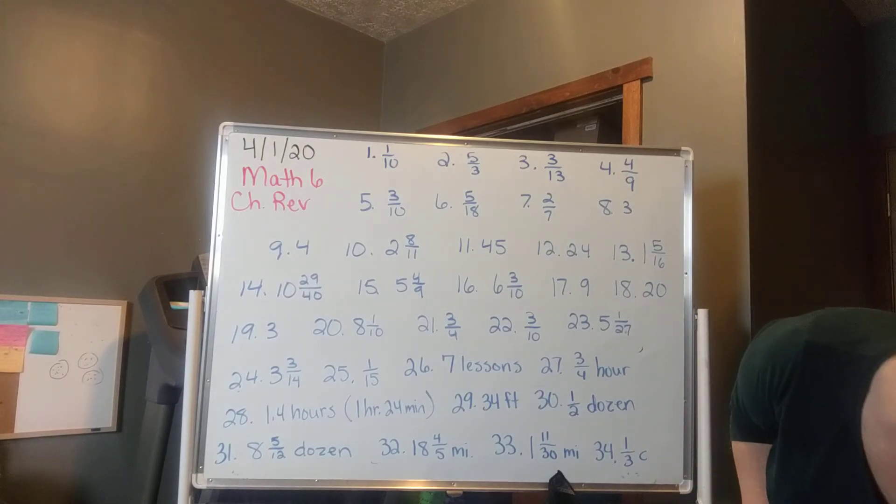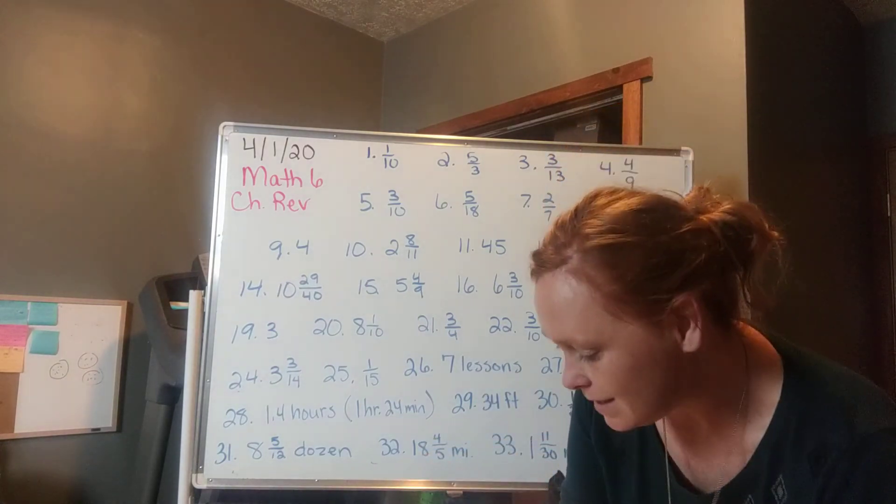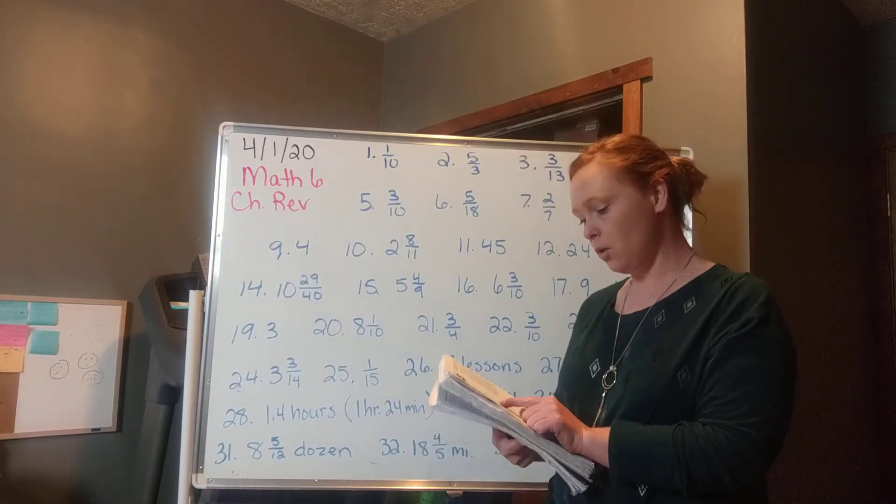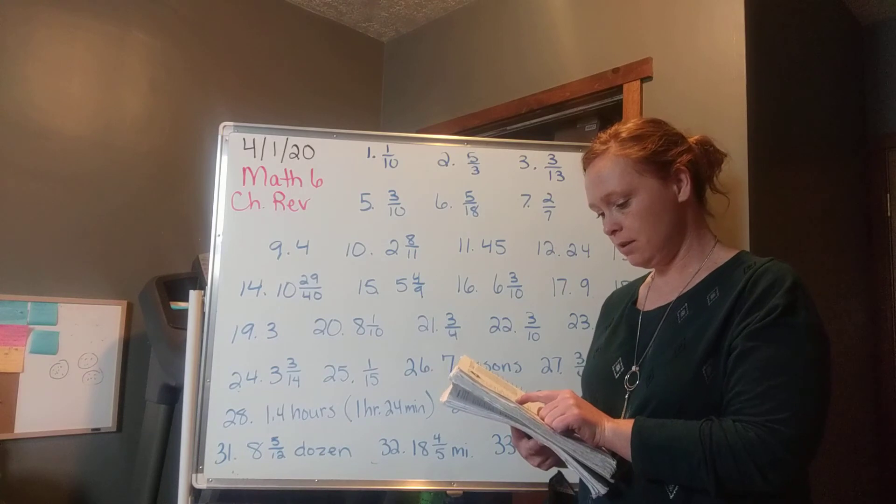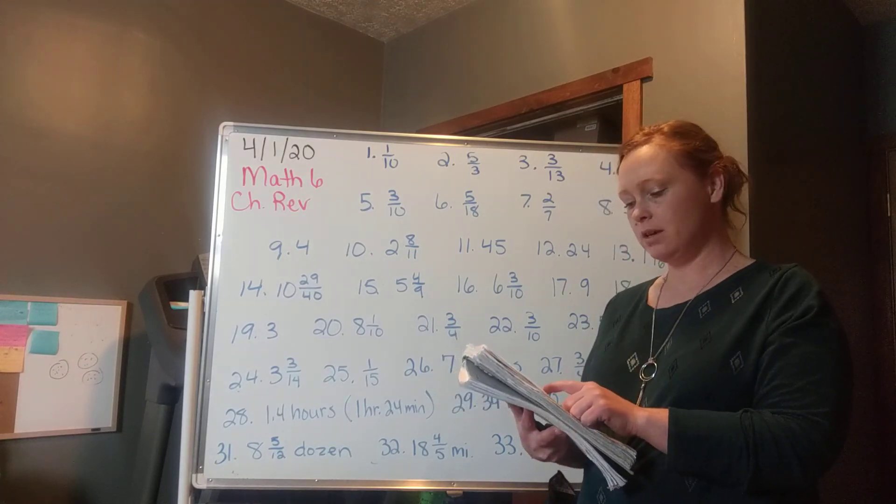Now I believe you have two more problems. Number 35 which will be 17 twenty-fourths of a yard. And number 36 is 1 and 3 fourths pound.